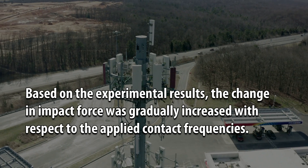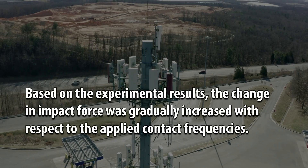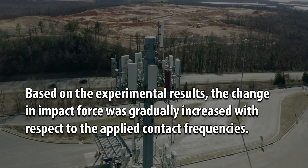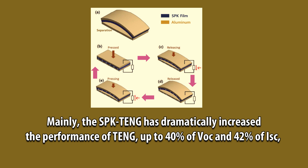Based on the experimental results, the change in impact force was gradually increased with respect to the applied contact frequencies. The novel SPK triboelectric nanogenerator produced 40 V and 2.8 microampere of open-circuit voltages and short-circuit currents at 4 Hz, respectively. The SPK triboelectric nanogenerator has dramatically increased the performance of triboelectric nanogenerators, up to 40% of VOC and 42% of ISC.